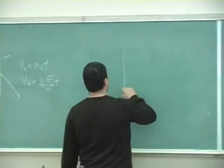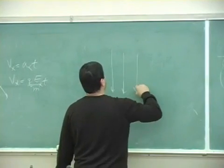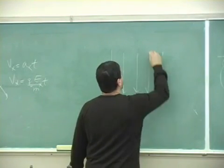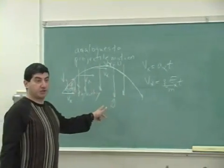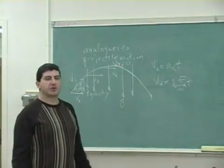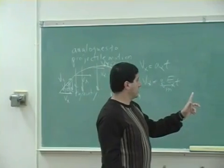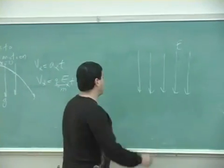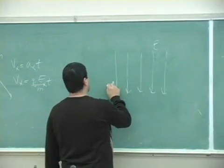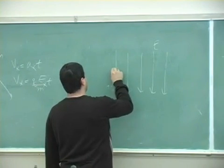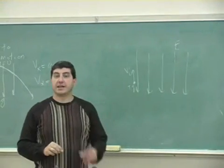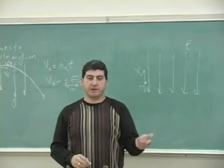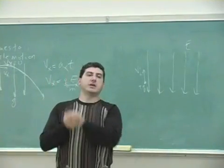So the E field goes down. That's equivalent to the gravitational field going down, and then throw the charge at an angle. If I have a positive charge and throw it this way, then I create the equivalent of freefall, throwing up and down.